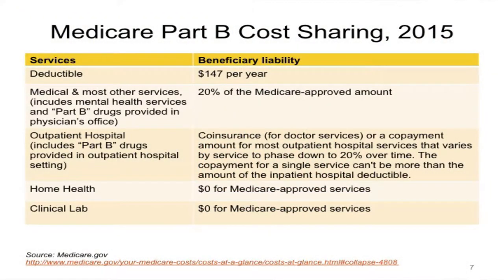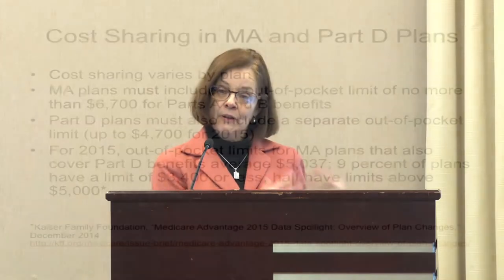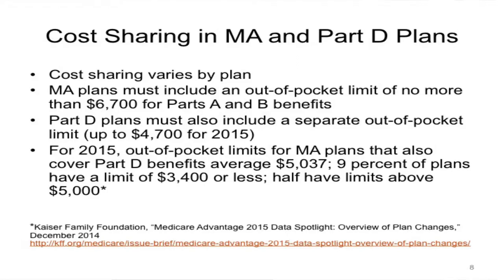For Part B, there's an annual deductible of $147. For most Part B services, beneficiaries pay 20% of the cost, though not for home health, lab services, or some preventive benefits. When people choose to enroll in a Medicare Advantage plan, cost-sharing is determined by the plan and will vary. There is an out-of-pocket limit required of Medicare Advantage plans — it cannot be more than $6,700. For 2015 MA plans, the average out-of-pocket limit is about $5,000; 9% of plans have limits of $3,400 or less, and half of plans have limits above $5,000.